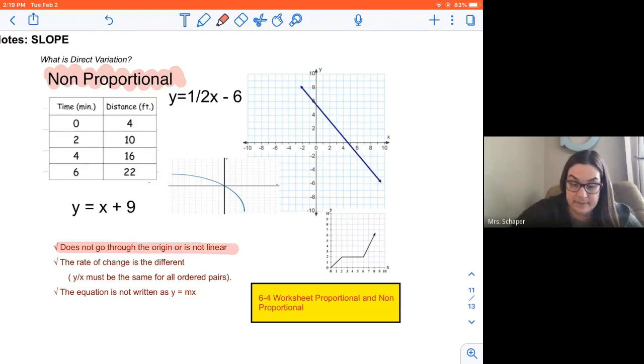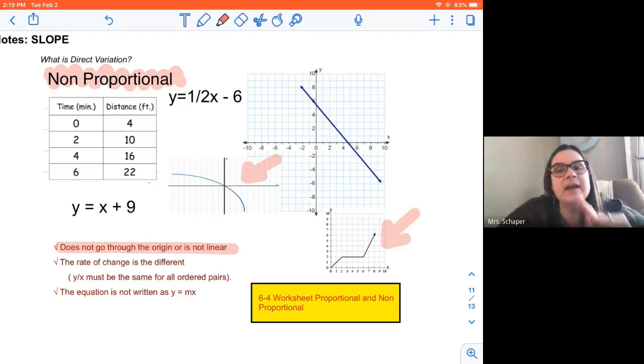So when I look at these, this one is non-linear, this one's non-linear, it goes through the origin. It's not linear. It's not a straight line. It has to be a straight line and it has to go through the origin. When I look at this graph, it's a straight line, does not go through the origin. So those are all examples of non-proportional functions.